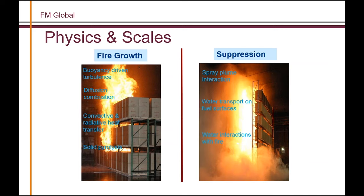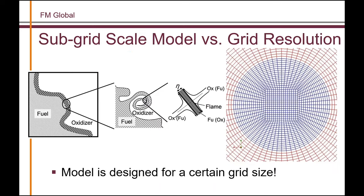Beyond the additional physics, there is another issue of scale. In industrial fire suppression, we're typically talking about tens of meters — a 50-foot warehouse with high storage. So the computational domain is large. On the other end, the small-scale physics and geometry can be at the millimeter level — heat transfer near the wall, droplets, detailed rack geometry — requiring much smaller resolution. There is a big scale separation from large scale to small scale. The larger the scale separation, the larger the total mesh size needed and the higher the computational cost.